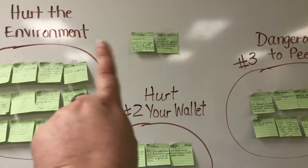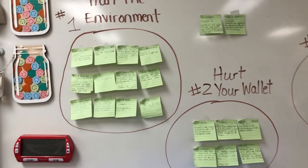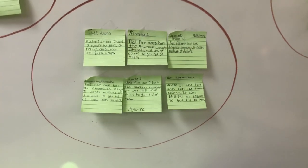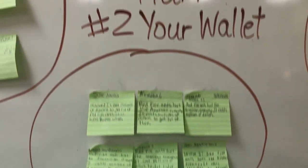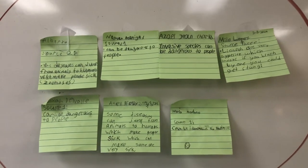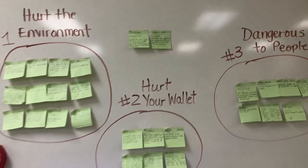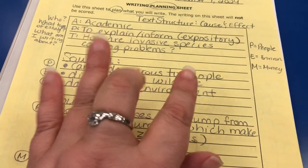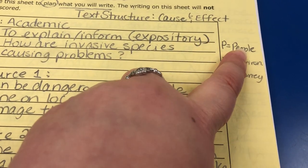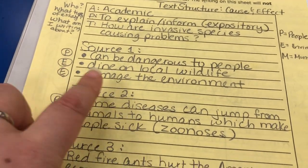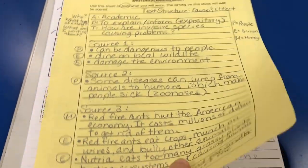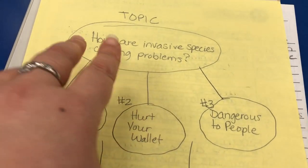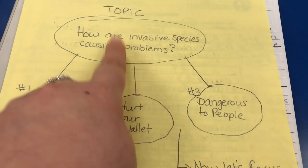The problems grouped into three categories. I asked students to title each group: 'hurt the environment,' 'hurt your wallet' for the spending money problems, and 'dangerous to people' — these became the three body paragraphs. I also showed them that during the test they can create a little code — P for people, E for environment, M for money — to tag each detail and see which ones group together. Then on the back, I showed them how to create their graphic organizer to organize the essay.